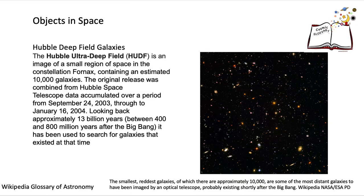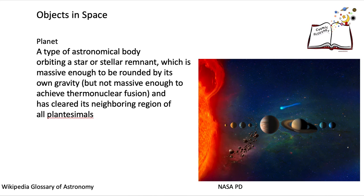The Hubble Deep Field Galaxy image, captured with the Hubble Space Telescope, shows a large number of galaxies — spiral and otherwise — out in deep space. A planet is an astronomical body; the ones shown here are rotating around the Sun.